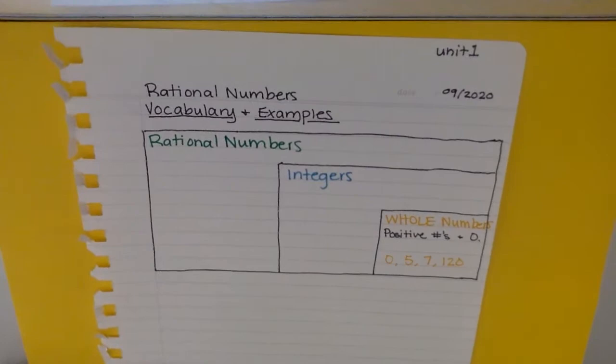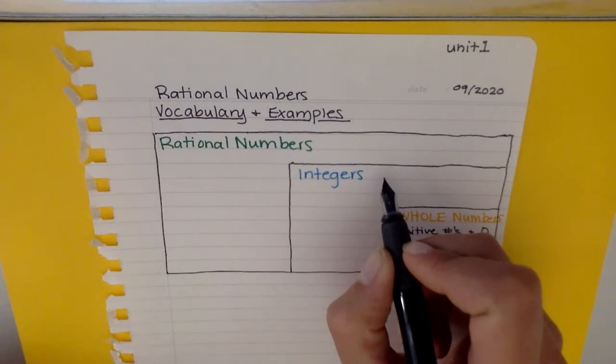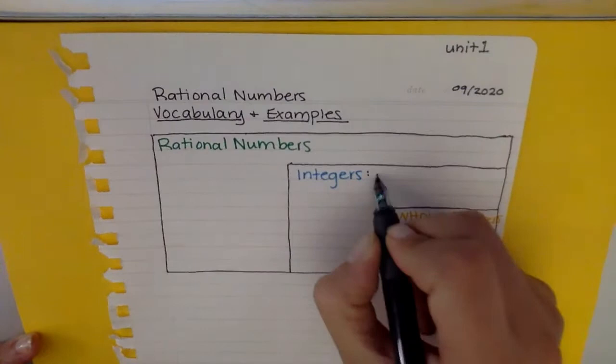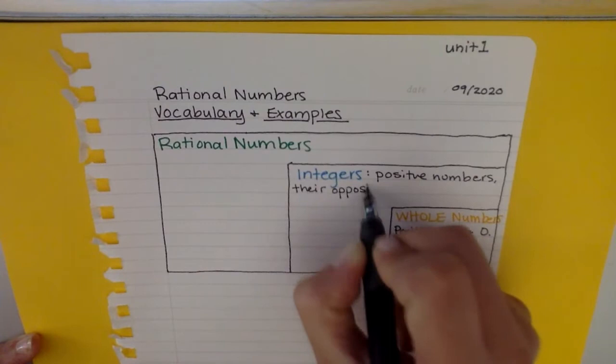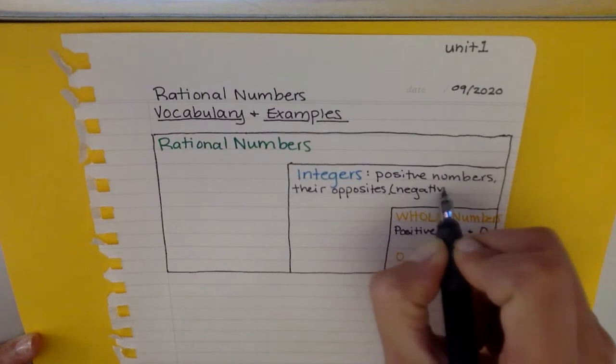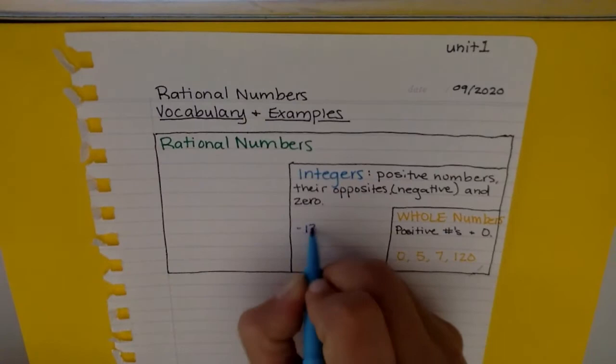The next one that we're really focusing on for this unit is called integers. So integers are all of these positive numbers and also includes their opposite, so the negative numbers and zero.